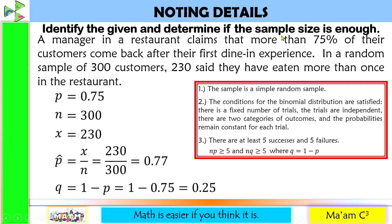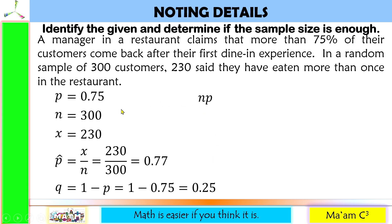To determine if the sample size is sufficiently large, let us solve for NP. Our N again is 300, our P is 0.75. The product of this is 225, and this is greater than 5. Now, let us solve for NQ. Again, N is 300, Q this time is 0.25. This will give us 75, is still greater than 5. Both NP and NQ are greater than 5. Therefore, the sample size is sufficiently large.